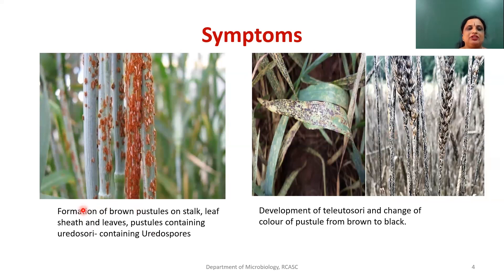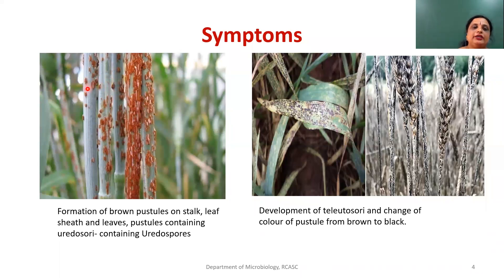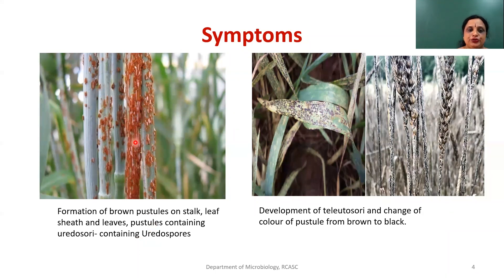You can see elongated pustules or blisters containing thousands of spores called uredospores in each pustule. The color of these uredospores is reddish-brown, which is why the disease is called rust disease. So the first symptom is the formation of reddish-brown pustules or blisters on the infected part of the plant, and these pustules contain uredospores. A group of uredospores is called a uredosorus.